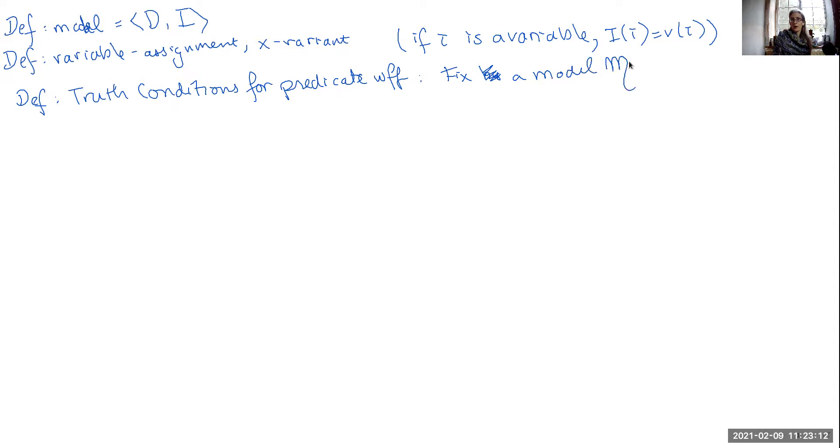So we'll call our model curly M, this domain plus interpretation, and variable assignment V, and then we define a notion of truth with respect to a model and variable assignment of some formula phi in a recursive fashion. Just as we did for the propositional cases, we will start with defining when an atomic formula is true or false, and then the truth conditions for the propositional connectives, and then we will talk about the quantified formulas. So we'll do these each in turn.